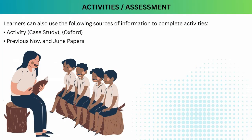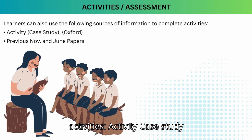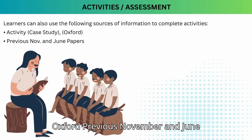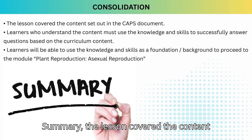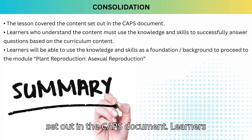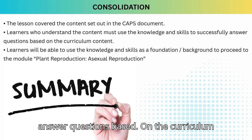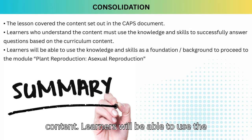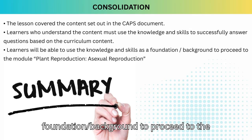Activities and assessment. Learners can also use the following sources of information to complete activities: activity, case study, Oxford textbook, and previous November and June papers. Summary: the lesson covered the content set out in the CAPS document. Learners who understand the content must use the knowledge and skills to successfully answer questions based on the curriculum content. Learners will be able to use the knowledge and skills as a foundation to proceed to the module Plant Reproduction: Asexual Reproduction.